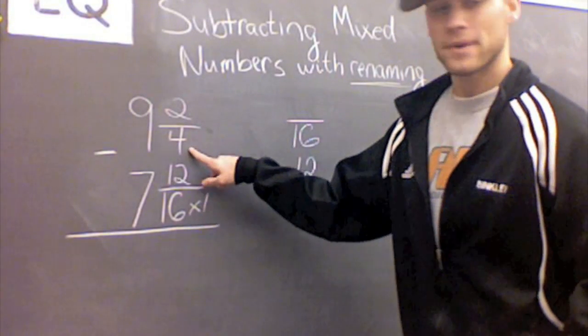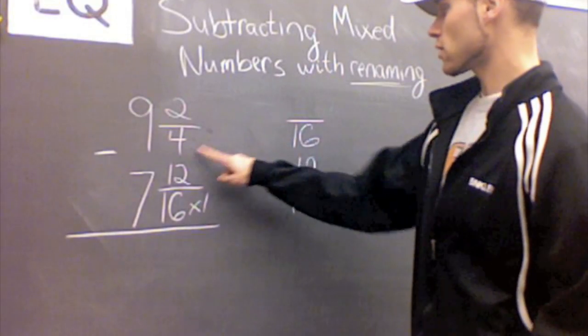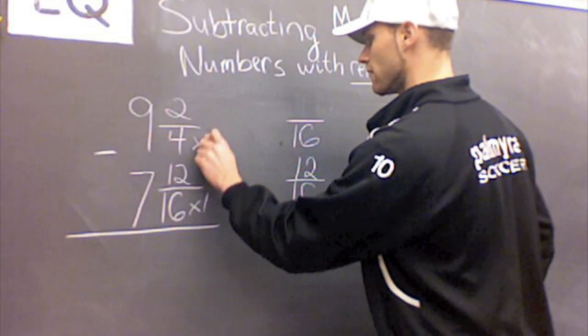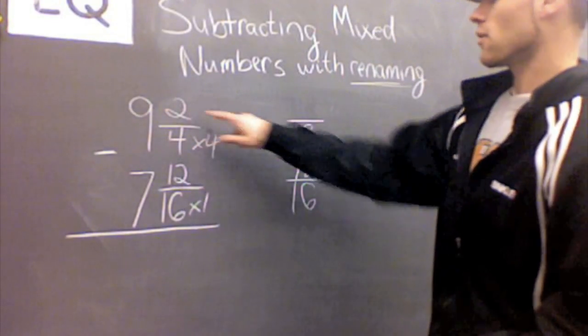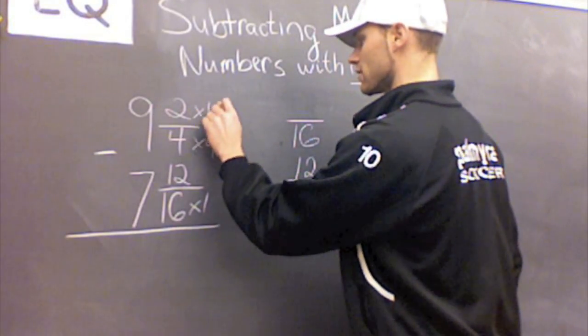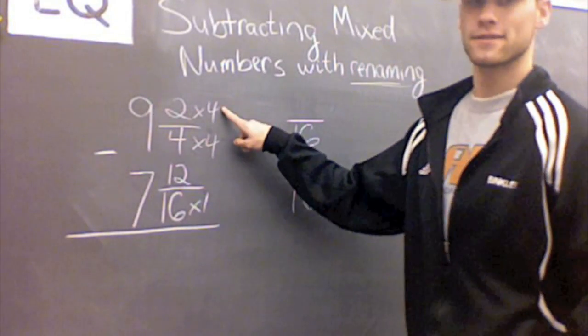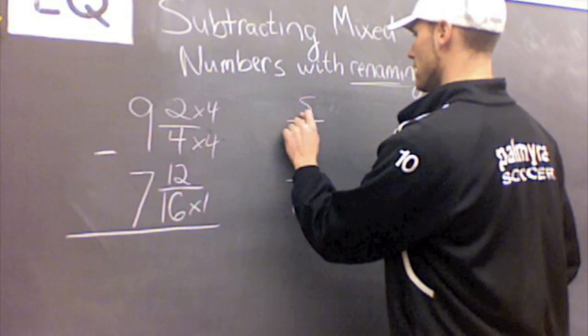Up here we have to make our equivalent fraction. 4 times what gives us 16? Well, 4 times 4 gives us 16. So we have to take 2 times 4 because whatever you do to the bottom, you have to do to the top. So 2 times 4 is 8.